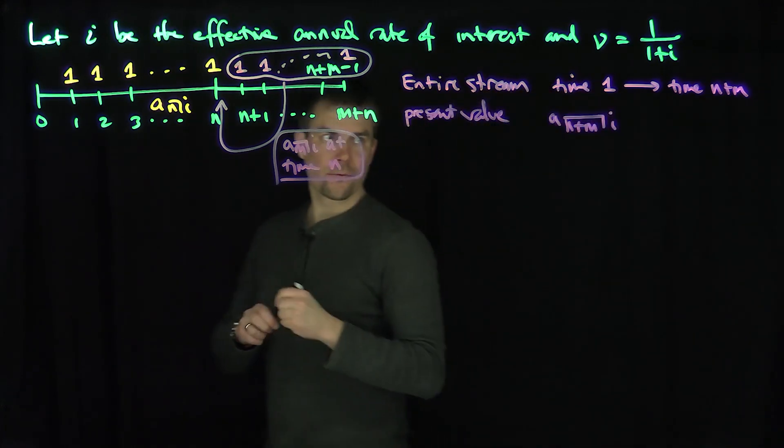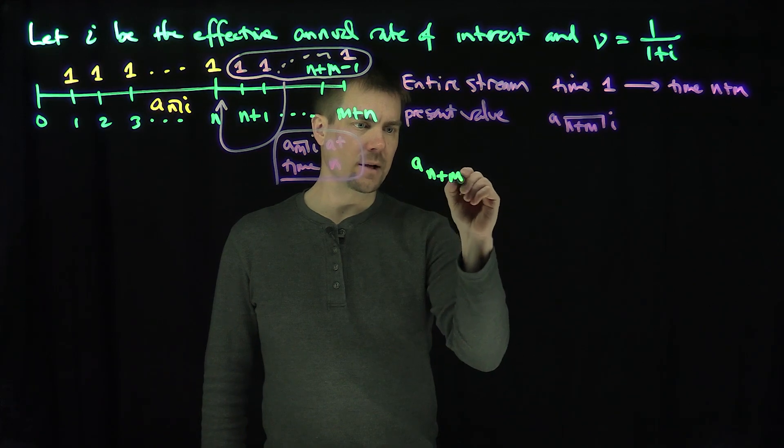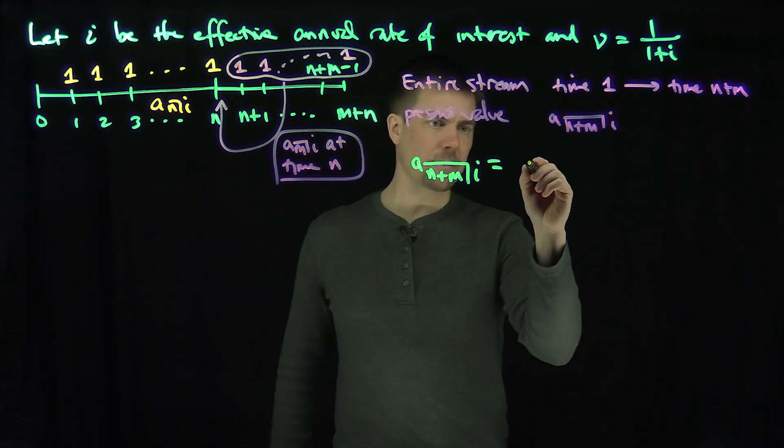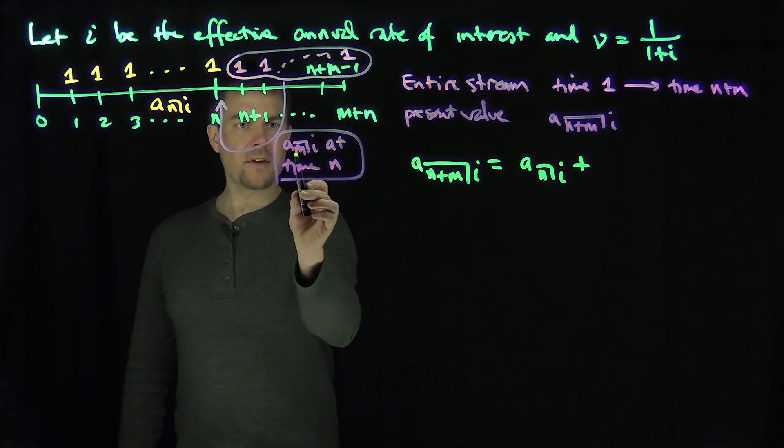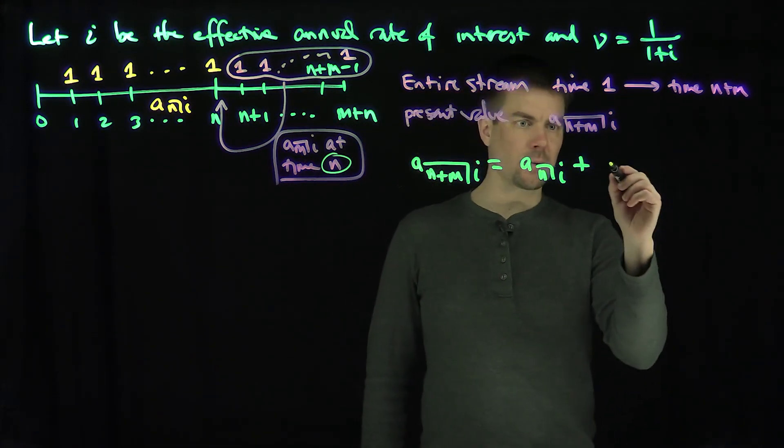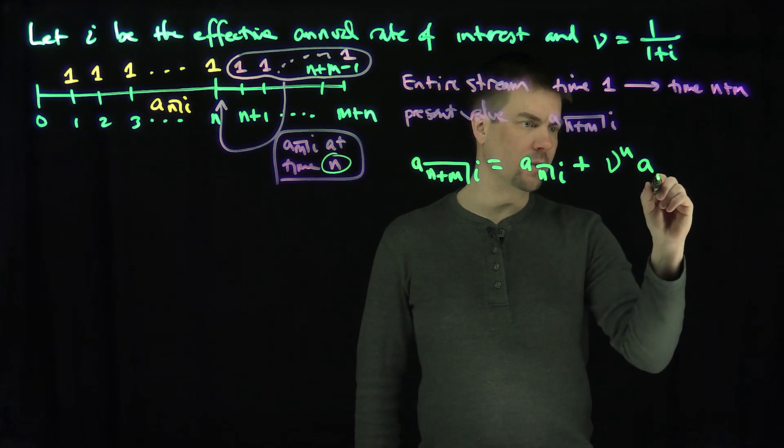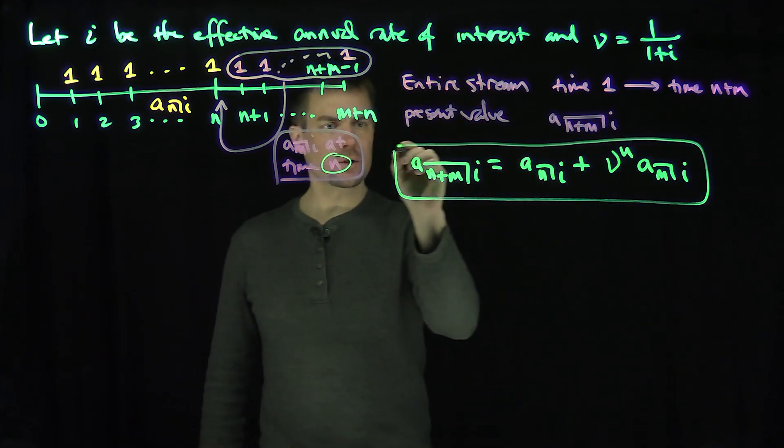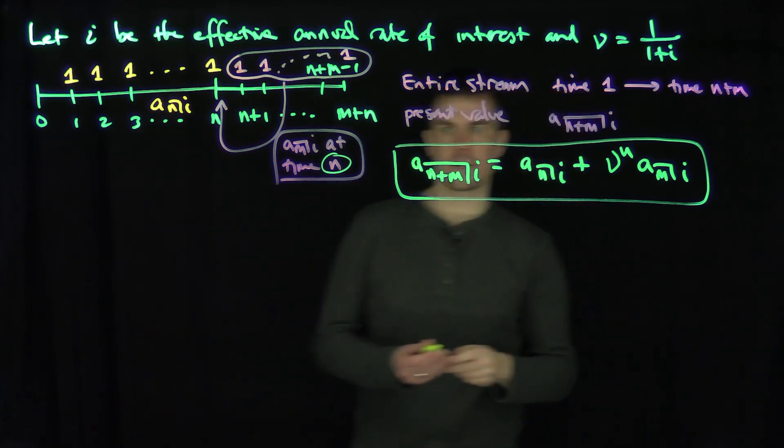This gives us a way of writing a nice formula: a_{n+m,i} is the present value of the first couple payments, the a_n,i, plus I would have a_m,i, but I need to discount that by n units of time. So we get this beautiful formula that relates a longer term annuity to an n period and an m period.